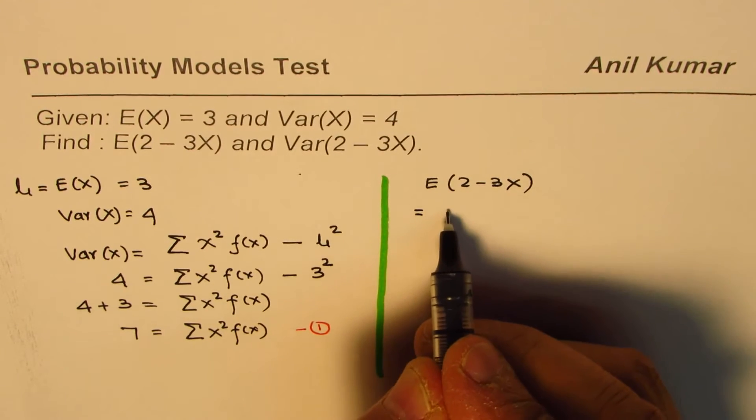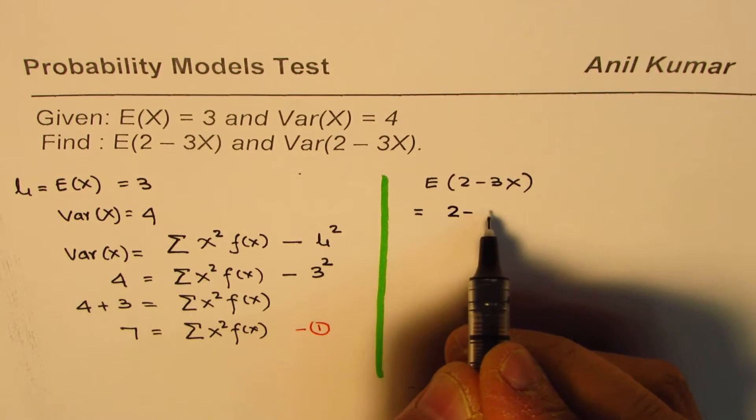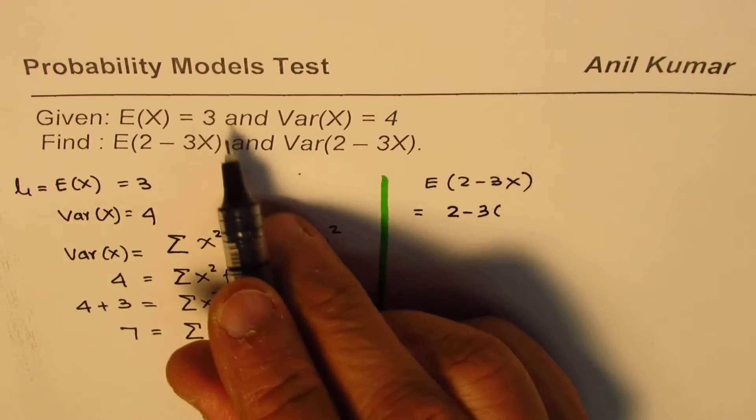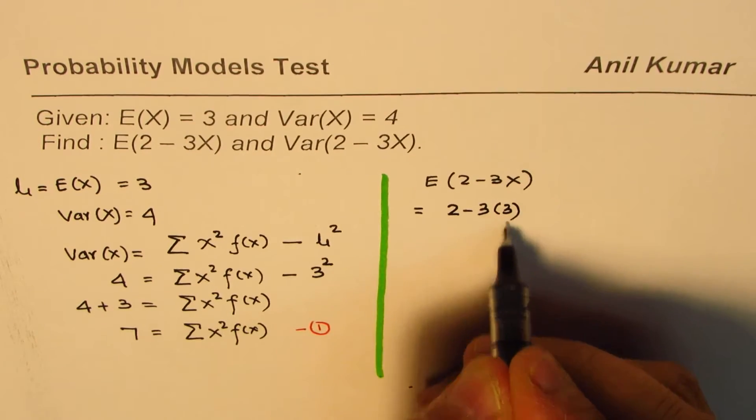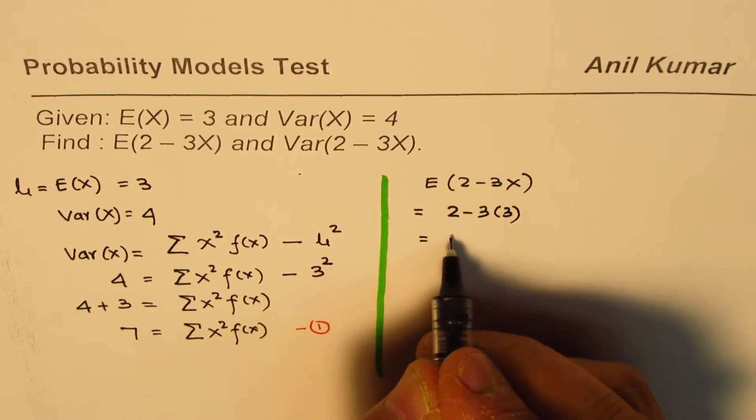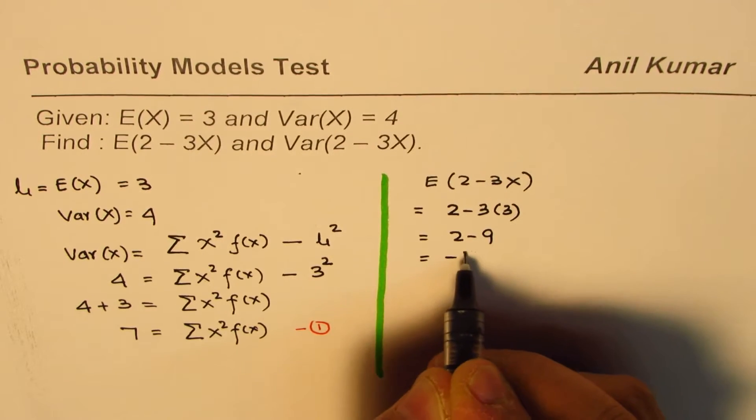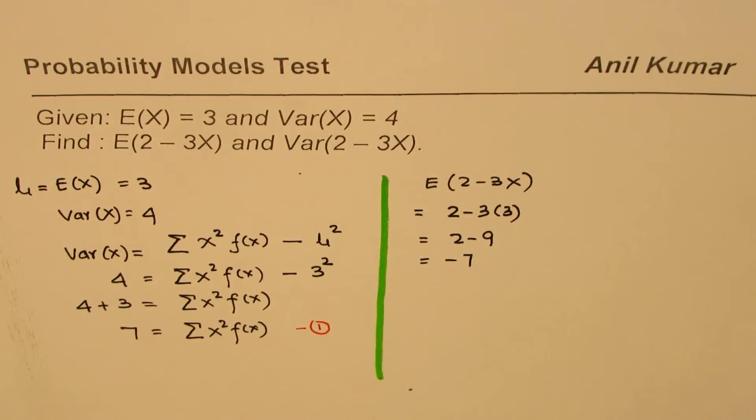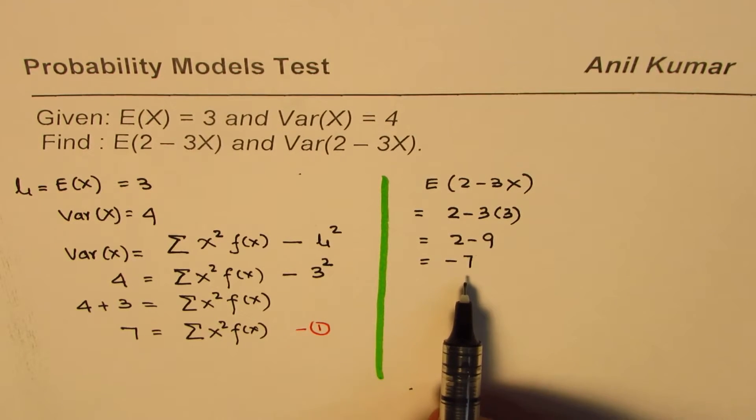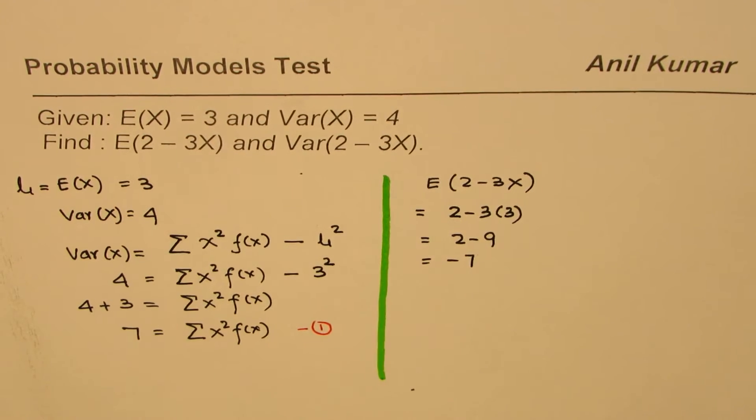So it is equal to 2 minus 3 times 3, which is equal to 2 minus 9 or minus 7. So this value is minus 7. That is how we could find this value.